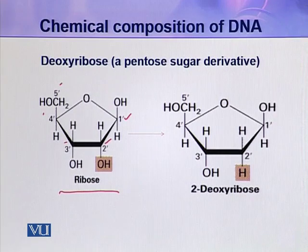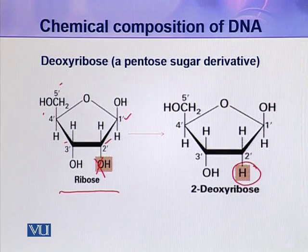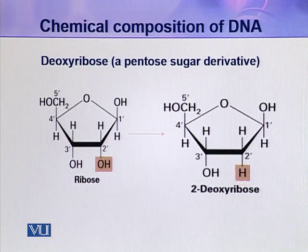If at the 2 prime position one oxygen is removed, ribose sugar becomes deoxyribose. So at the 2 prime position, one oxygen is missing. This is deoxyribose sugar, and it is one component of the deoxyribonucleotide.